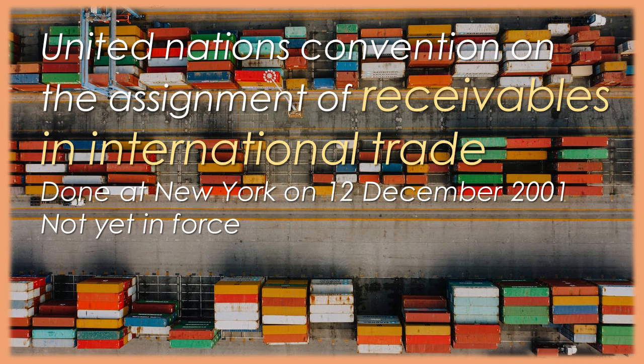Article 25. Subordination. An assignee entitled to priority may at any time subordinate its priority unilaterally or by agreement in favor of any existing or future assignees. Chapter 5. Autonomous Conflict of Laws Rules. Article 26. Application of Chapter 5. The provisions of this chapter apply to matters that are: a. within the scope of this convention as provided in Article 1, Paragraph 4; and b. otherwise within the scope of this convention but not settled elsewhere in it.